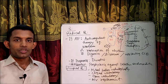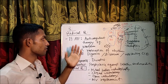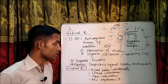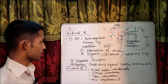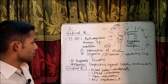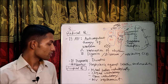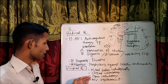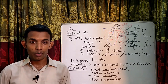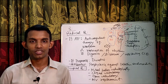Treatment of mitral stenosis: Medical treatment — for atrial fibrillation: anticoagulant therapy such as warfarin, plus rate/rhythm control with digoxin, beta blocker, or rate-limiting calcium channel blocker. For dyspnea: diuretics to reduce pulmonary edema. Antibiotic prophylaxis against infective endocarditis. Surgical treatment includes mitral balloon valvuloplasty, closed valvulotomy, open valvulotomy, and mitral valve replacement. Please give your feedback in the comments and subscribe for next videos.